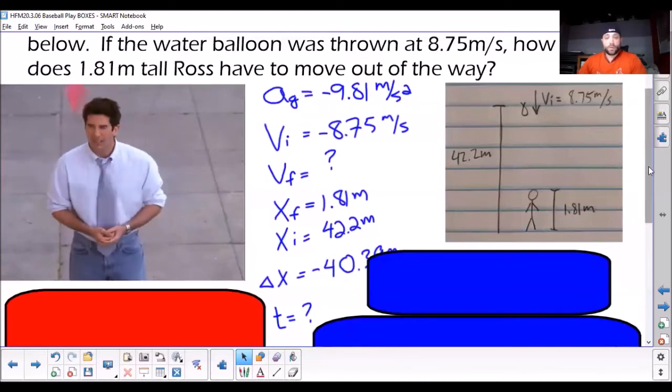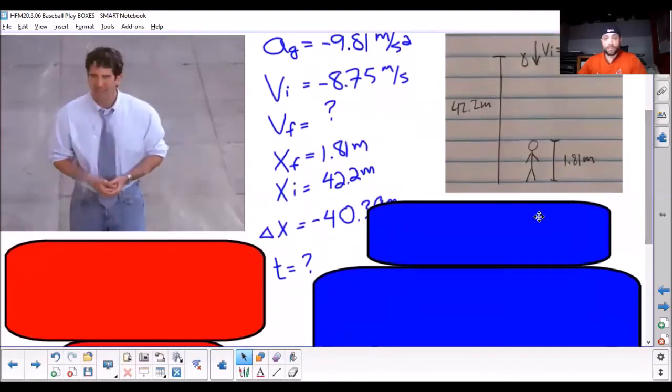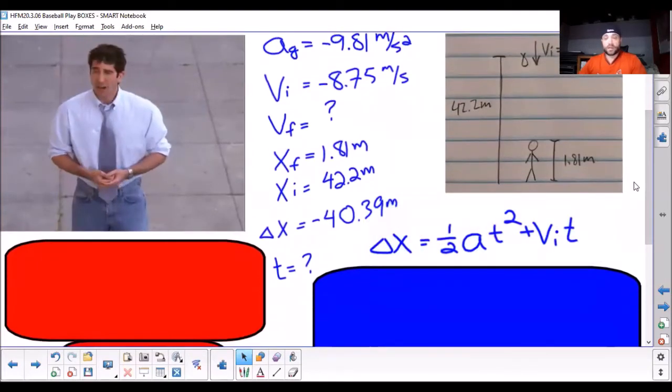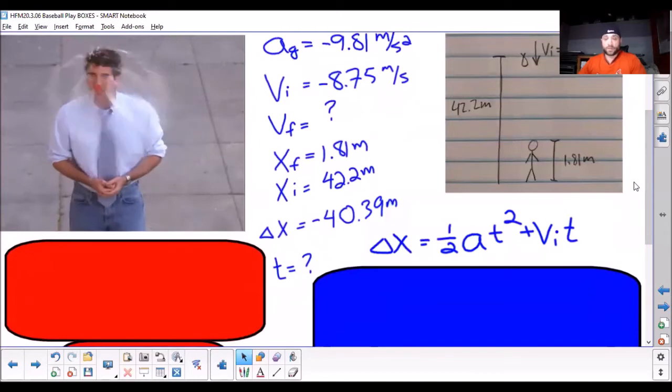So, from there, we're looking for time, and we don't have final velocity. So, if you look through all of your equations, you probably would have stumbled upon this one, which would have probably been the best choice, given the information you're given.